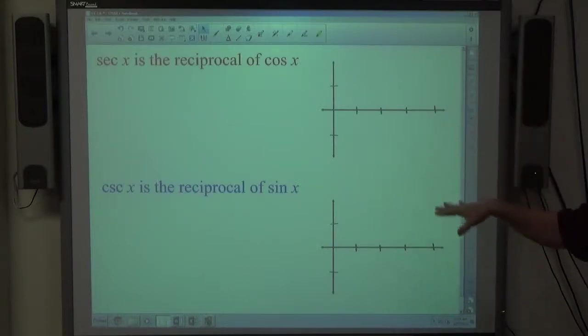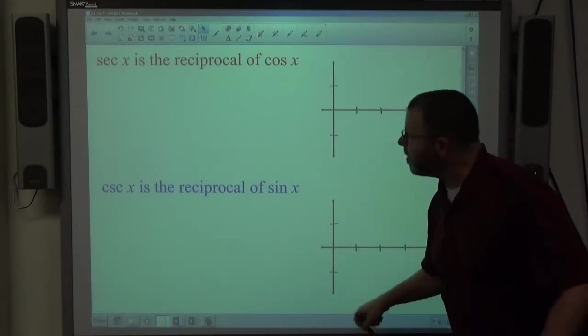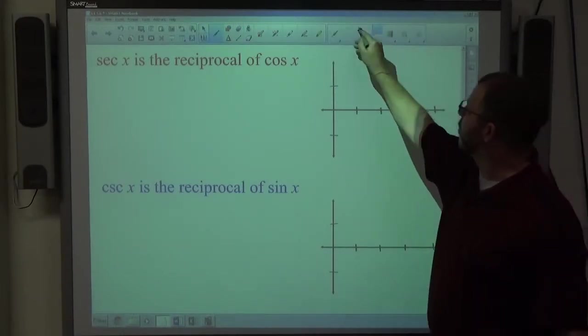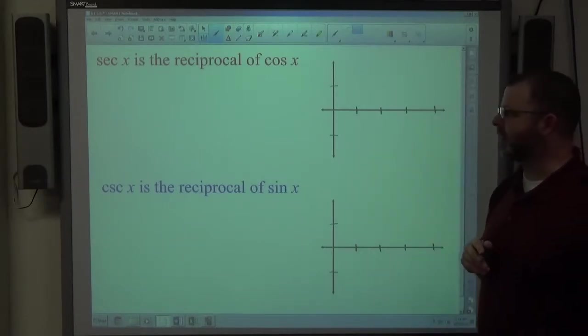Rather than having an entire new sheet about how to do this, I'm going to give you a visual of this one and I'll print it out when I'm done. Secant and cosecant are reciprocal functions of cosine and sine.